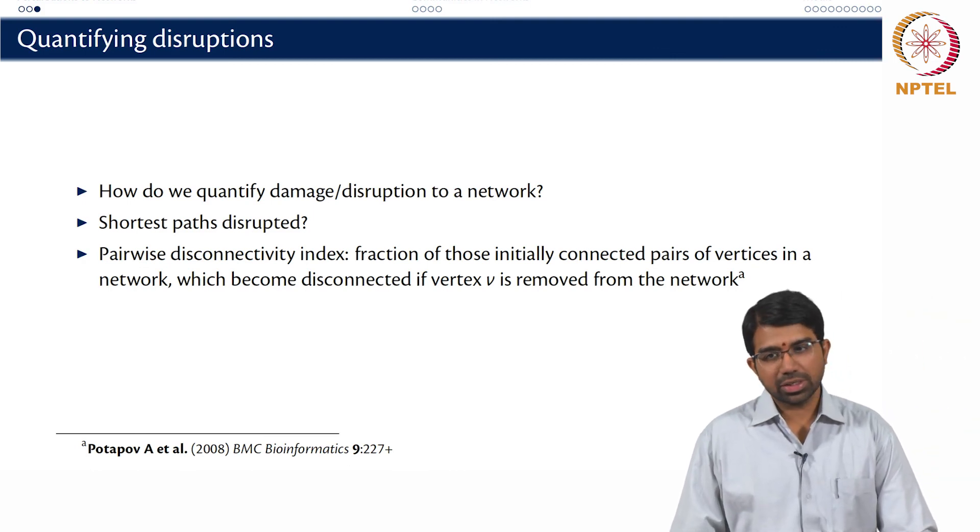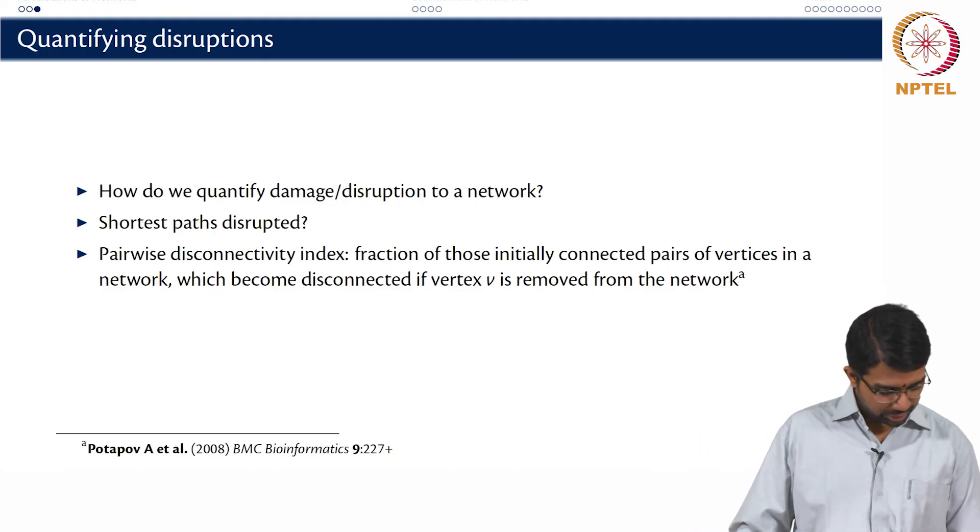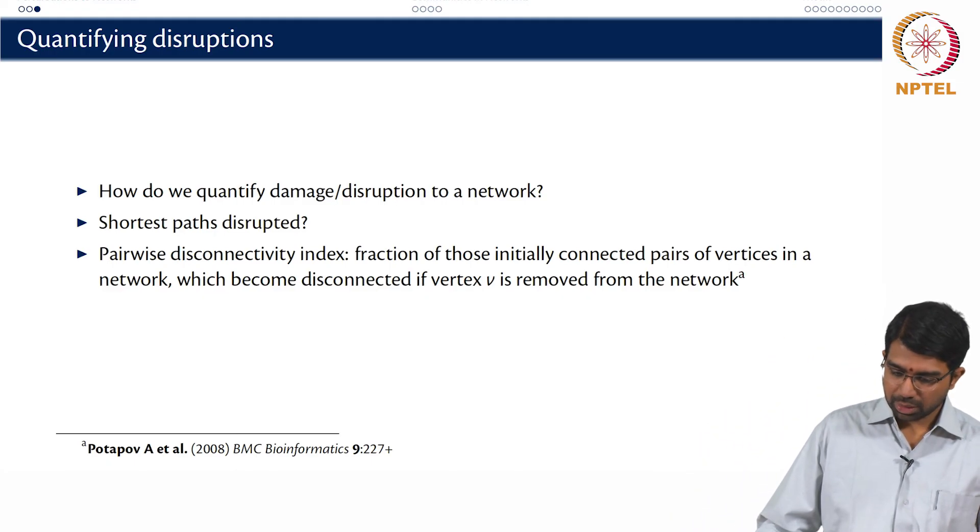The classic way is to measure how many nodes get disconnected but you can also count how many shortest paths get lost. Maybe you have alternate shortest paths which get lost and things like that.